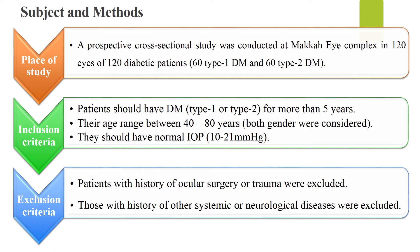Considering subjects and methods, a prospective cross-sectional study was conducted at Macca Eye Complex in 120 patients with diabetes. Both types were considered, either type 1 or type 2. Patients should have had diabetes mellitus for more than 5 years, their age ranged between 40 to 80 years, and both genders were considered. They should also have normal IOP of not more than 21 mmHg. As we know, the IOP has an adverse effect on the retinal layers, especially the thickness of the macula.